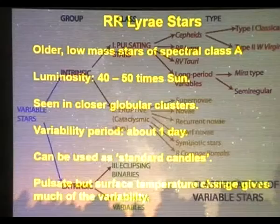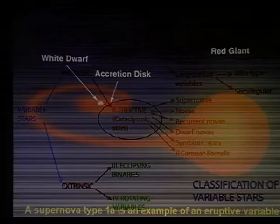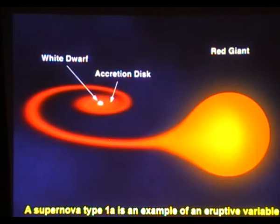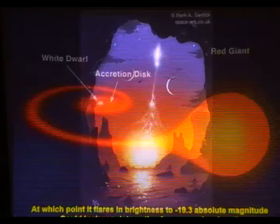The eruptive and cataclysmic stars — supernovae and novae — can all be variable at times, some very, very bright. This is how the Type 1a supernova occurs: you've got a white dwarf in the middle which accretes mass pulled off by gravity from its companion star. When it reaches 1.38 solar masses it explodes — it becomes a supernova. It goes to minus 19.3 absolute magnitudes, and there you have it: it's a standard candle again.